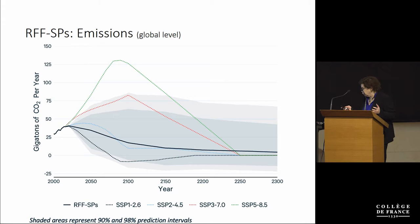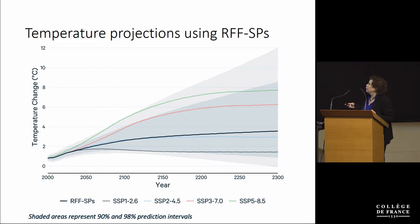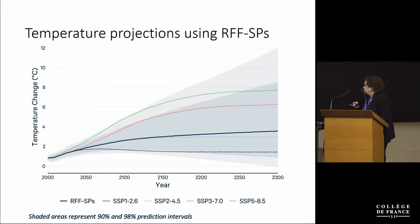Putting this into the FAIR climate model, projections of mean global temperature out to the year 2300 show the median of the distribution going up to about 3 degrees Celsius. The chances of being below 2 degrees Celsius by the year 2100 are very small — there's some positive probability, but very small.